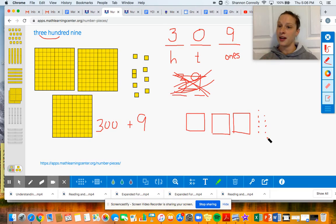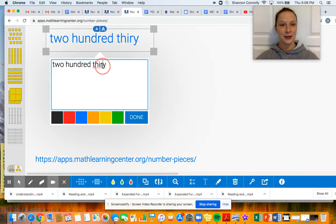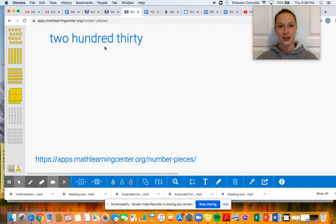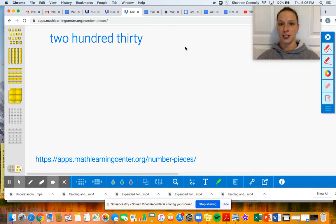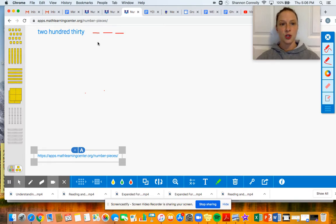All right, we have one more example, then I have a bunch for you to try. Last one. 230. So we're going to be thinking about 230. So let me just put us our hundreds, tens, ones up here. I think that they're going to make me make this smaller. I'm just going to get rid of this guy, and we're going to get started. So 230, let's get started.